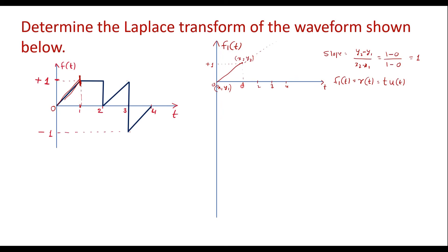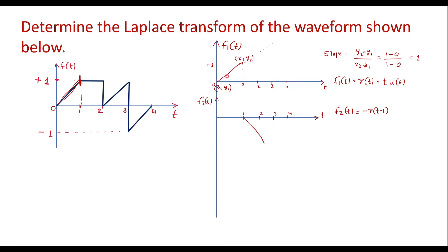Let me add the negative ramp signal and call it f2(t). This is a negative ramp signal beginning at t equal to 1. The value of f2(t) is minus R(t − 1), because it is the same as f1(t) but delayed by 1 unit. In terms of the unit step signal, f2(t) = −(t − 1)·u(t − 1).